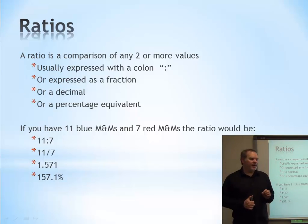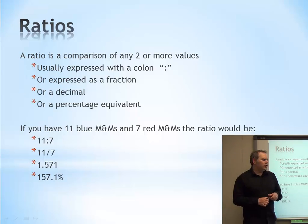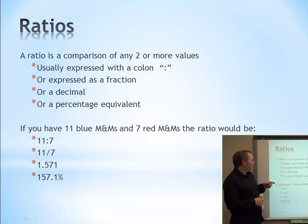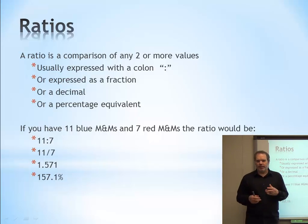A ratio is a comparison of any two or more values. Usually, we're going to express it with a colon or express it as a fraction. We might express it as a decimal, 1 to something, 1 to 2.5. Or we might express it as a percentage equivalent, 235%.